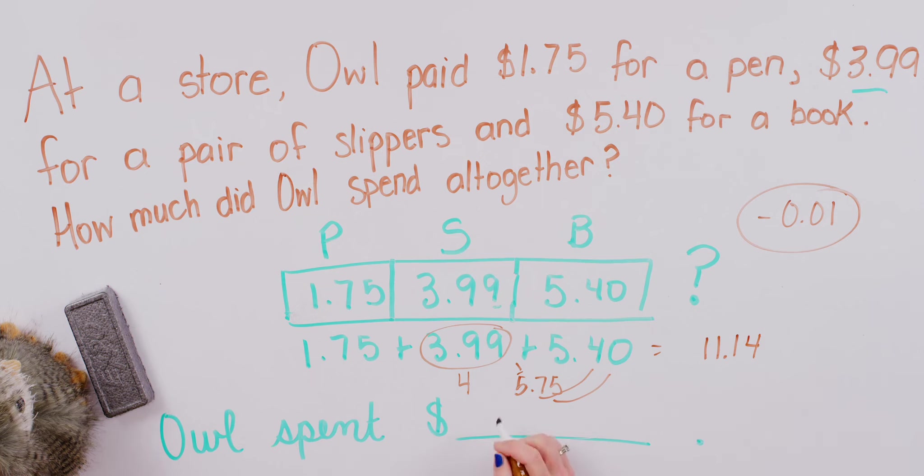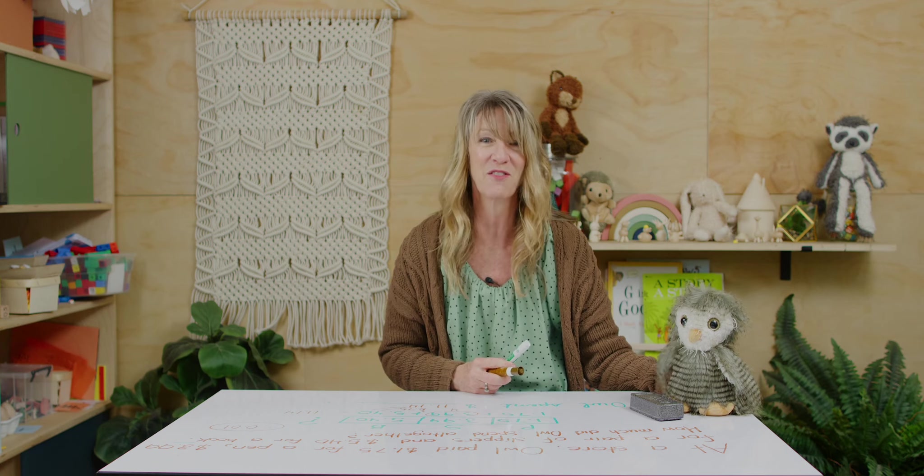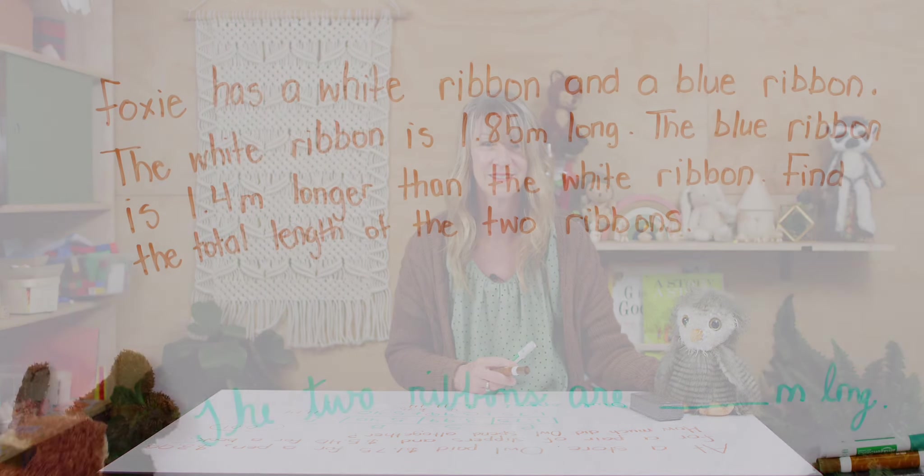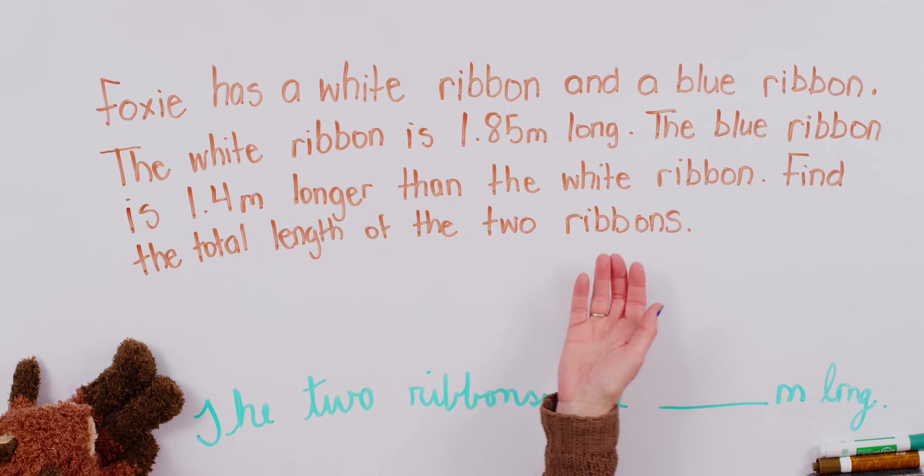We're going to take our information from there and record it here. So, Owl looks like you spent $11.14. Nice job, everybody. Let's try another one. All right, this time we have Foxy with us. Let's read a number story with Foxy.